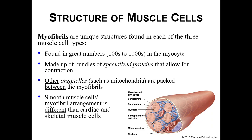Other organelles like mitochondria and the nucleus are just kind of stuffed in there. The arrangement of smooth muscle myofibrils is a little bit different than how cardiac and skeletal muscle myofibrils are arranged. That's what gives the appearance of striations in cardiac and skeletal muscles but not in smooth muscle cells — we still have the same components, they're just arranged in a different way.